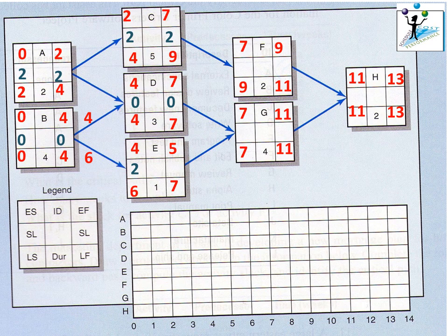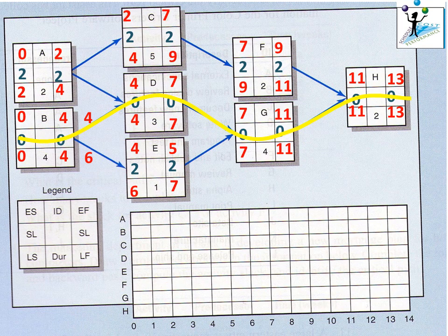Activity E has a float of two weeks, so it can be delayed by two weeks without impacting the project deadline. Activity F has a slack of two weeks — also a non-critical activity. Activity G has a slack of zero weeks, making it a critical activity that must be delivered on time. Any delay on activities with zero float will impact the project deadline. Activity H is also a critical activity with zero slack.